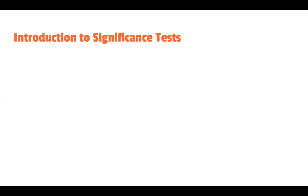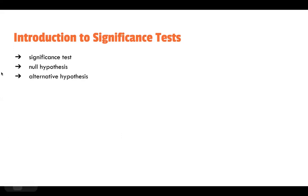So what is a significance test? A significance test is basically a test to see whether or not your claim is true, and this is usually done through two hypotheses: the null hypothesis and the alternative hypothesis. The null hypothesis, abbreviated as H₀ or H naught, is the hypothesis in which nothing has changed — it's all the same.